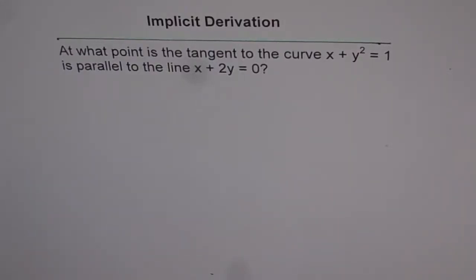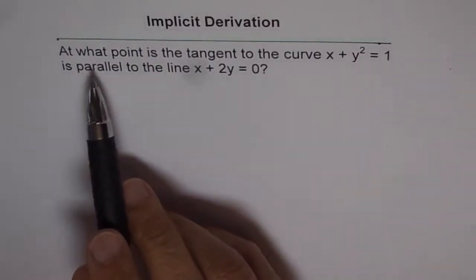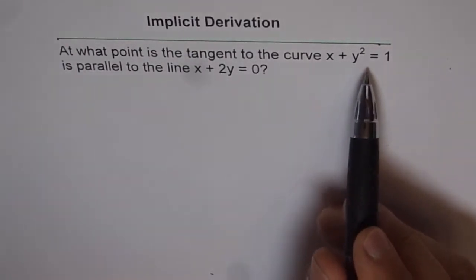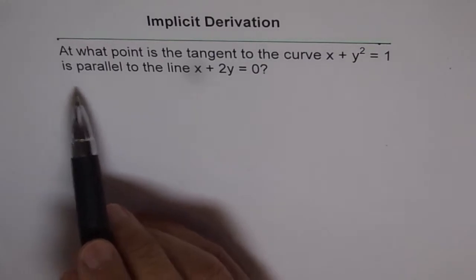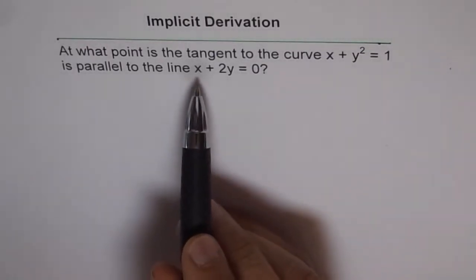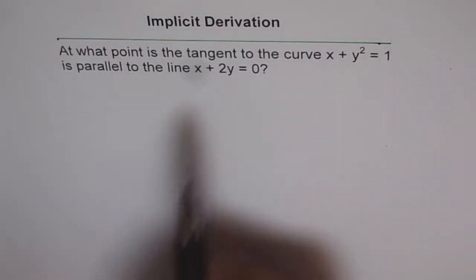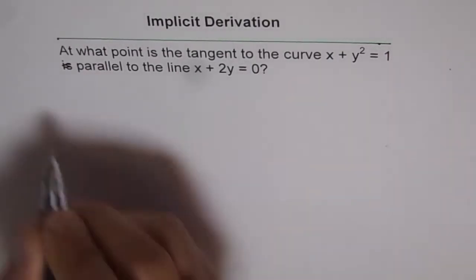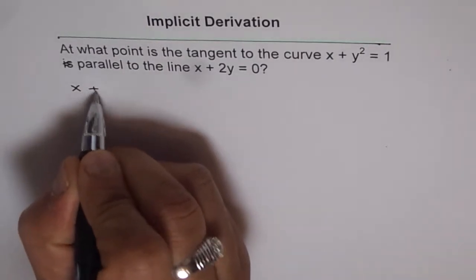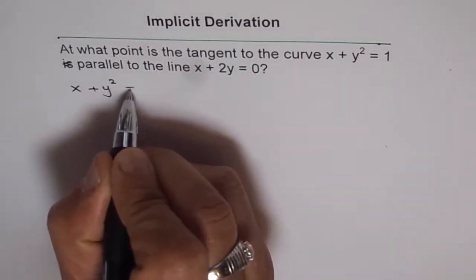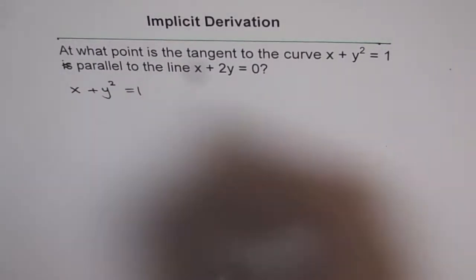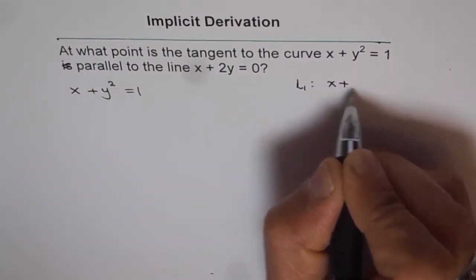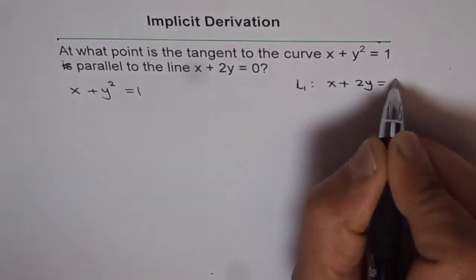Application of implicit derivation. At what point is the tangent to the curve x plus y squared equals 1 parallel to the line x plus 2y equals 0? So we have the equation of the curve as x plus y squared equals 1, and the equation of the line L1 is x plus 2y equals 0.